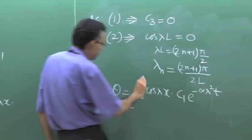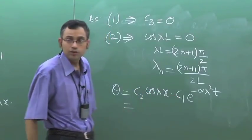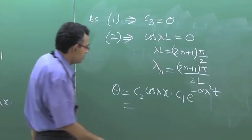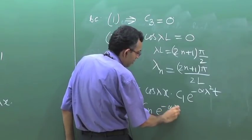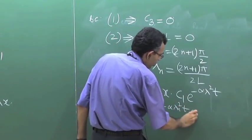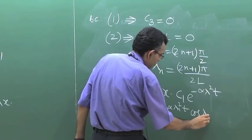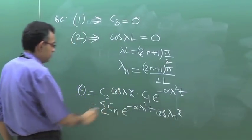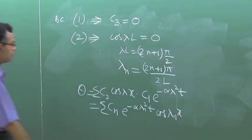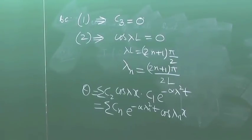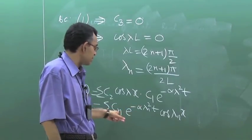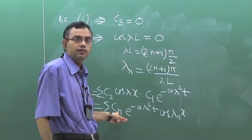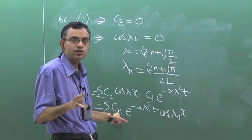The solution theta, with C3 equal to zero, is: theta = C2 C1 cos(lambda_n x) e^(-alpha lambda_n squared t). But we must keep in mind there are n such possible values of lambda. For each value of lambda this is a solution, and by the linearity of the governing differential equation, the total solution is a summation over n. So in place of C1 times C2 we write Cn, and the solution is a summation over all n of Cn e^(-alpha lambda_n squared t) cos(lambda_n x). The remaining task is to calculate Cn.